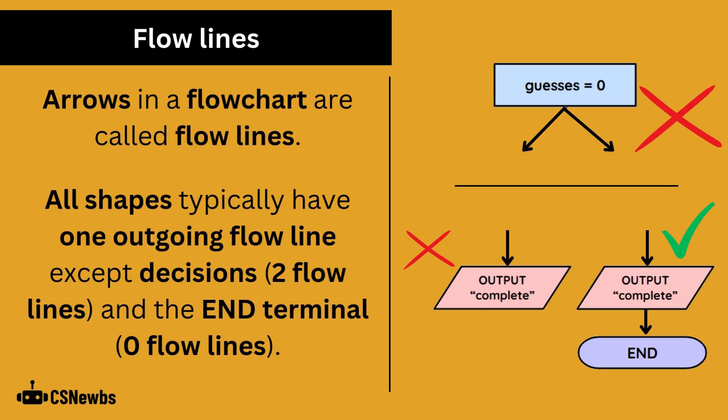Arrows in a flowchart are called flowlines. All shapes typically have one outgoing flowline, except decisions, which have two, and the end terminal, which has zero.